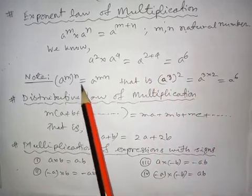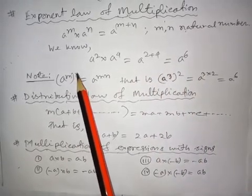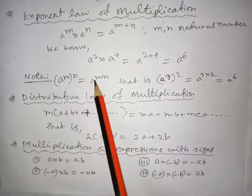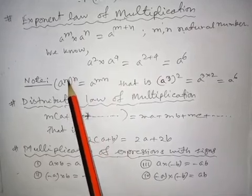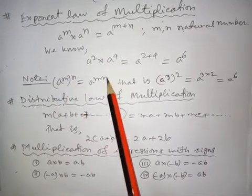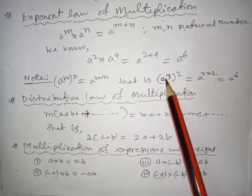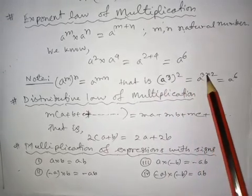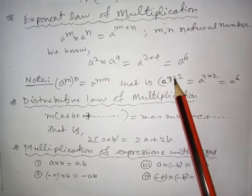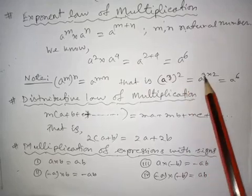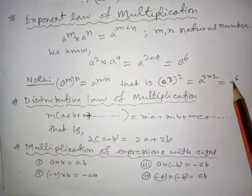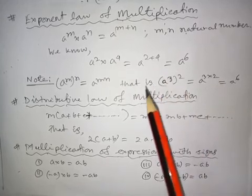There is another type of exponent law of multiplication: A to the power M, to the power N, equals A to the power M times N. That means if we take a power of an exponent, the powers are multiplied. For example, A to the power 3, to the power 2, equals A to the power 3 times 2, which equals A to the power 6. This is the basic concept of this form of the exponent law.